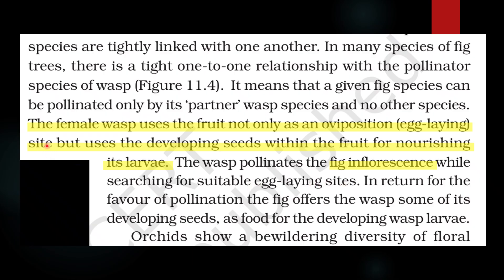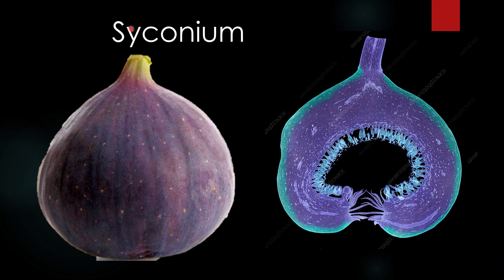You may get confused here because the female wasp uses the fruit as an oviposition site and also pollinates the fig inflorescence. But once there is a fruit, there is no need for pollination. The key point is that the term 'fruit' used here is not actually a fruit — it is basically a syconium. Though it looks like a fully developed fig fruit on the outside, inside it has a lot of immature flowers. So it is an immature, false fruit called a syconium.